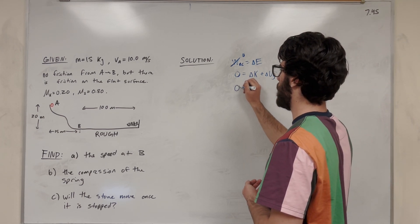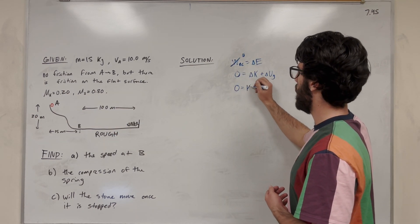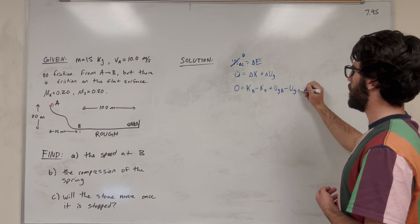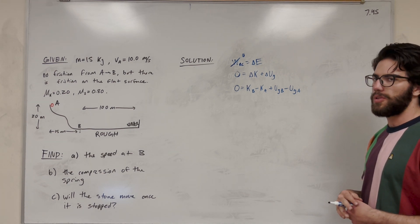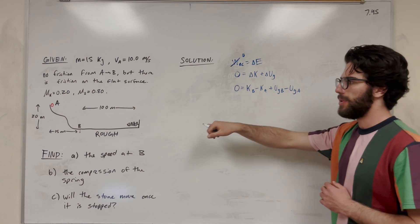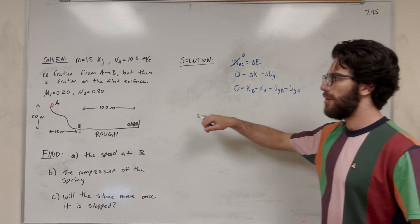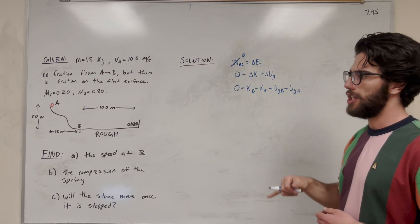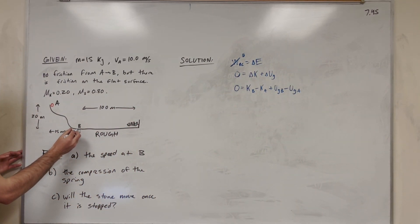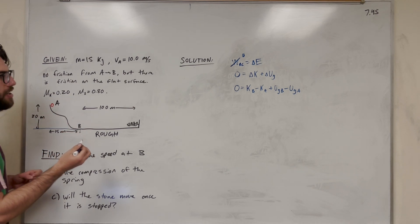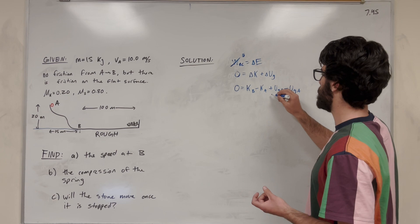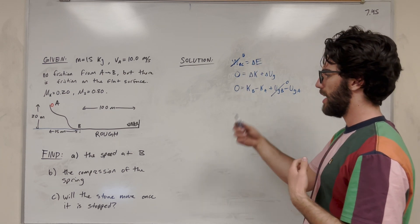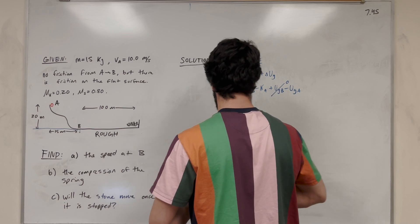Delta is final minus initial, so B minus A. That gives us K at B minus K at A, plus gravitational potential energy at B minus gravitational potential energy at A. Kinetic energy at B is nonzero because we have velocity at B. Kinetic energy at A is nonzero because we start with velocity. Gravitational potential energy at B is zero because B is our lowest point. We know A is 20 meters above point B, so we do have gravitational potential energy at A.